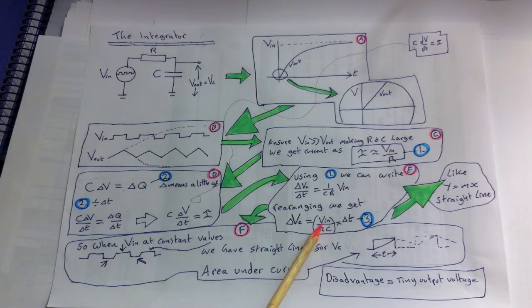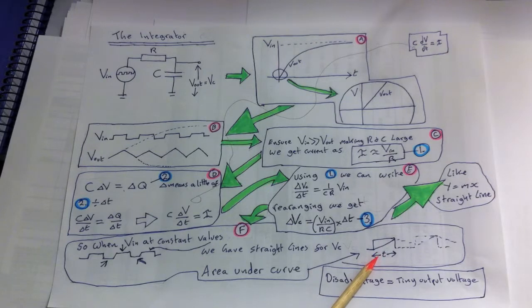So looking at one of our square wave pulses and multiplying Vin over RC by T you get total voltage stored on the capacitor plates over time. This is why this can be described as an integrator since as long as we use a big enough resistor and capacitor we get an output which is the integral of the input voltage.